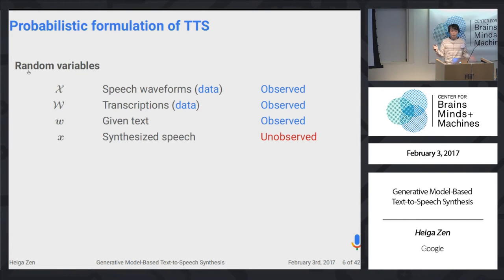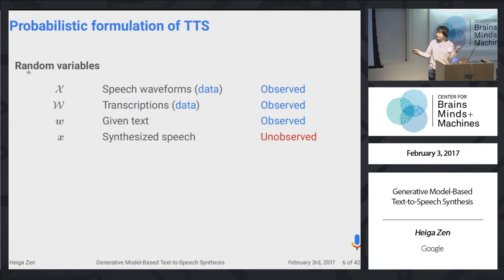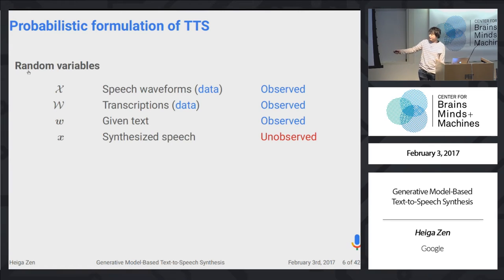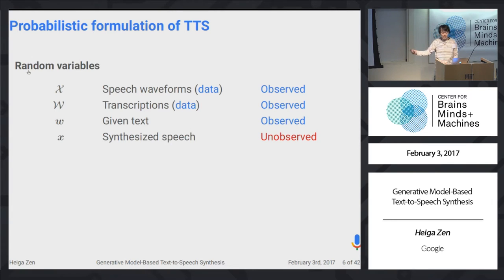I would like to formulate the speech synthesis problem in a probabilistic manner. In a typical speech synthesis system, we have four random variables: the recorded speech data, the transcriptions associated with that speech data, and the text to be synthesized — these three are observed. Finally, we would like to predict the speech waveform given these observed variables.